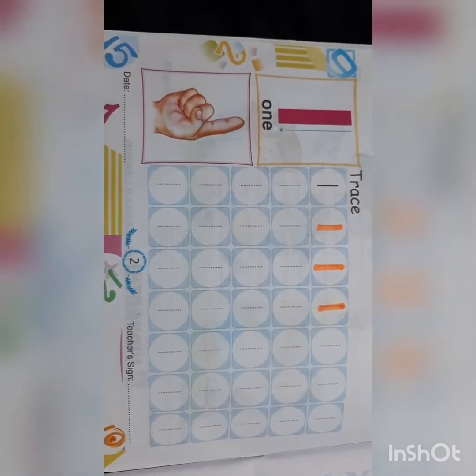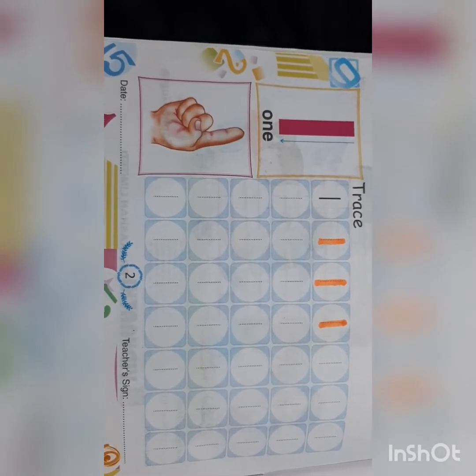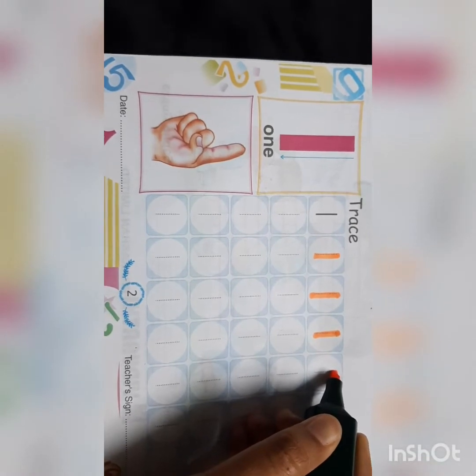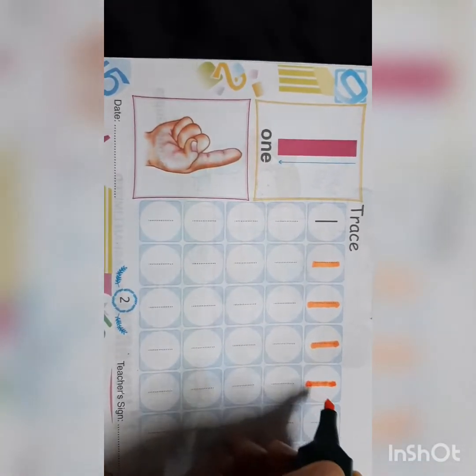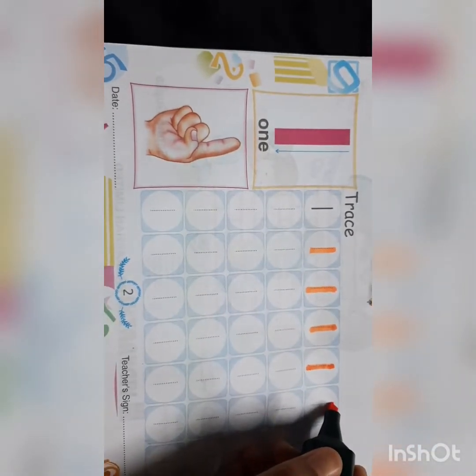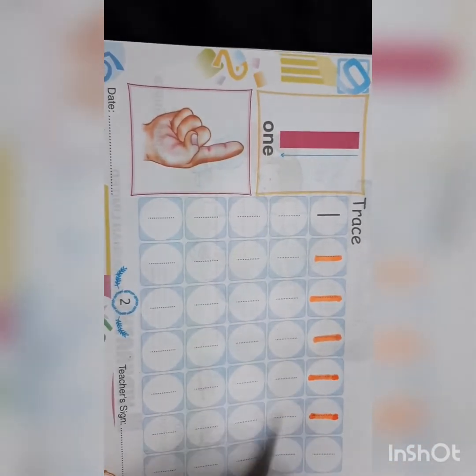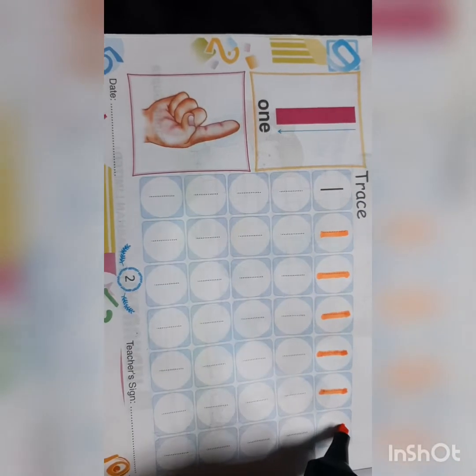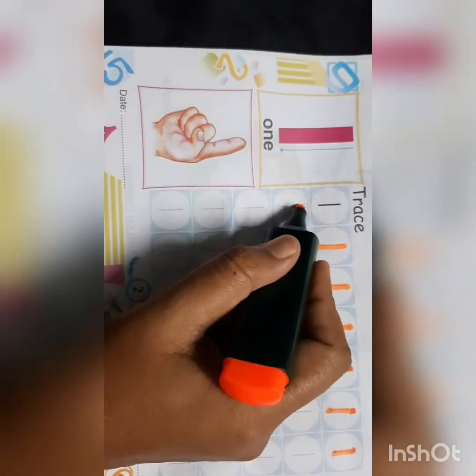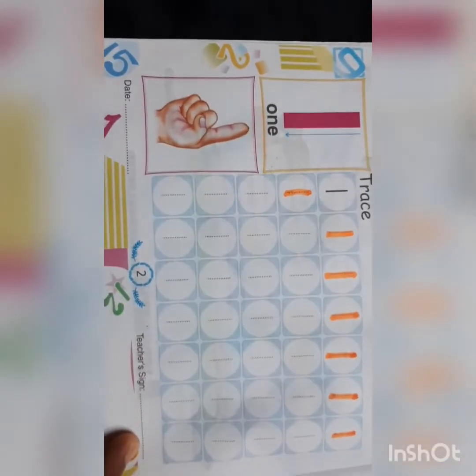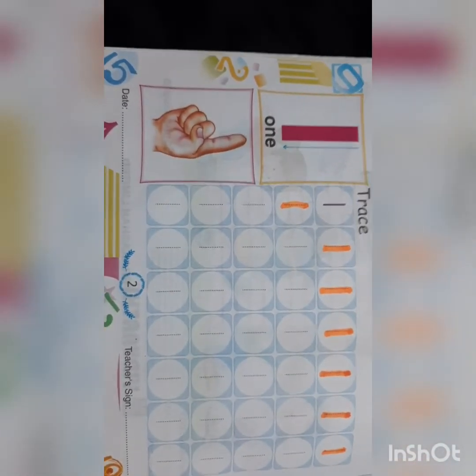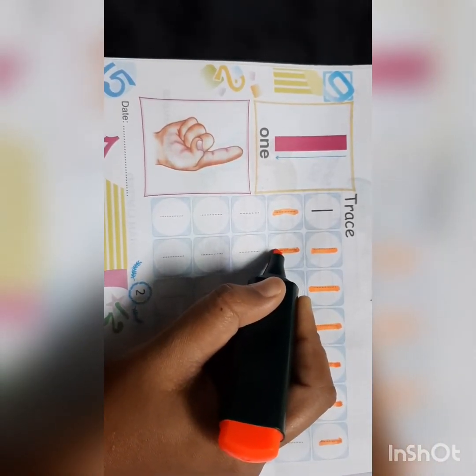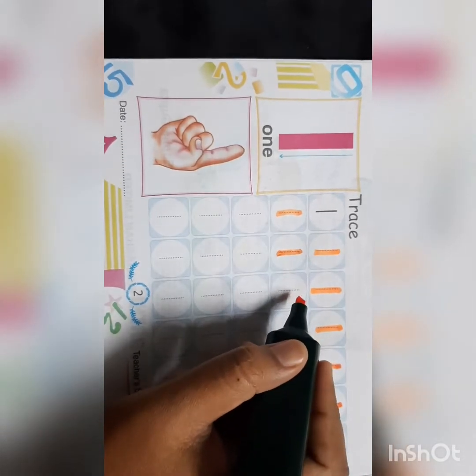So keep in mind, when you write one you should move your hand from up to down, from up to down. In this way, you trace all the number ones, all the ones. Do it with me. Do it in your book.